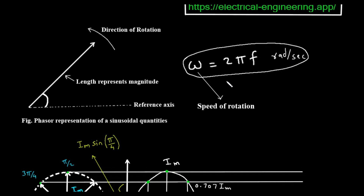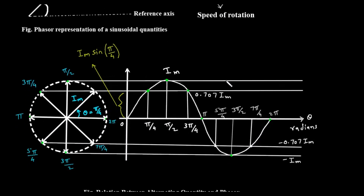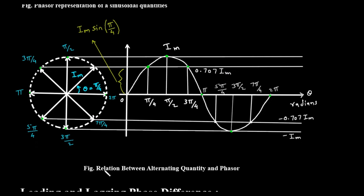How does this rotating arrow relate to the sine waves we see in AC circuits? The figure titled 'Relation between alternating quantity and phasor' shows this connection. On the left side, we have a circle with axes through its center. A rotating vector — our phasor — is shown inside this circle. Its length is labeled i sub m, which stands for the maximum or peak current. This phasor rotates counterclockwise. The diagram marks several key angles around the circle: 0, π/4, π/2, 3π/4, π, 5π/4, 3π/2, and 7π/4, before returning to 2π, which is the same as 0.